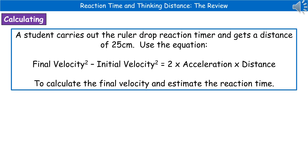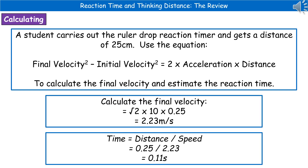The last thing they could ask is to use the ruler drop reaction timer result to calculate reaction time. For example: a student gets a distance of 25 centimeters. Using the equation v² − u² = 2as, we rearrange and substitute to get the square root of 2 times 10 times 0.25 (converting centimeters to meters), giving a final velocity of 2.23 meters per second. Then, using time equals distance divided by speed: 0.25 divided by 2.23 gives 0.11 seconds as the estimated reaction time.